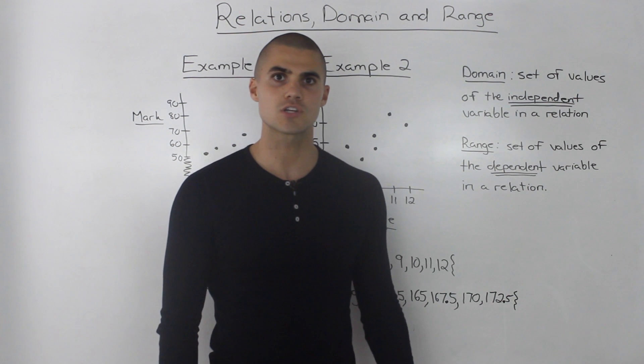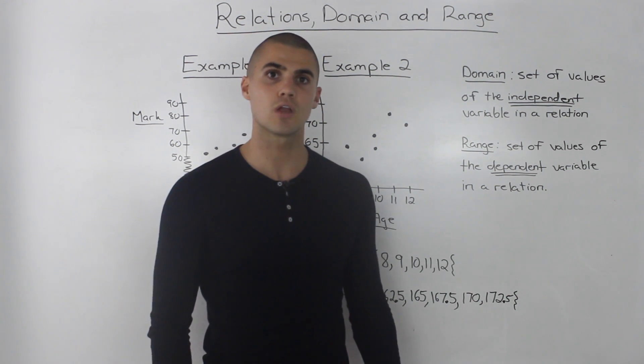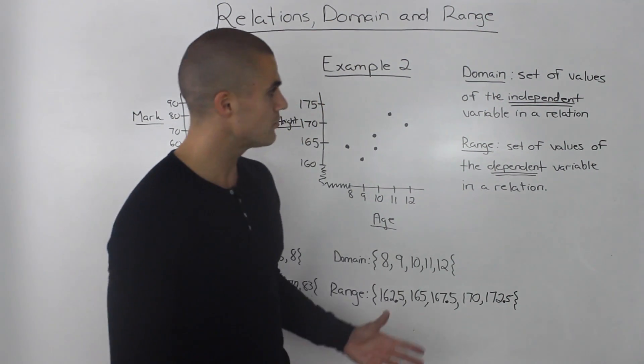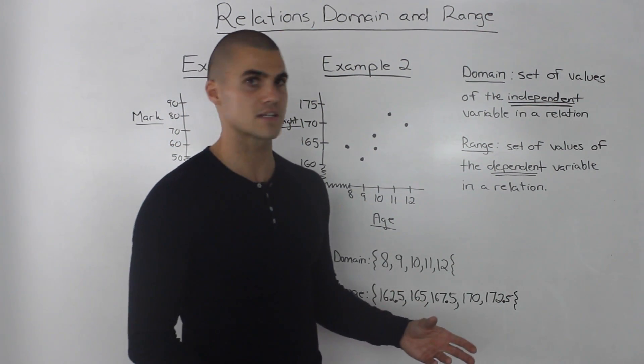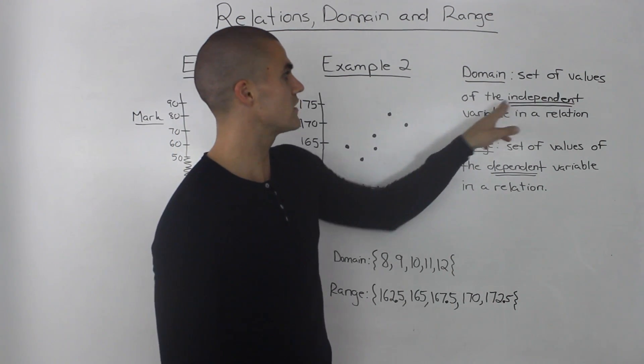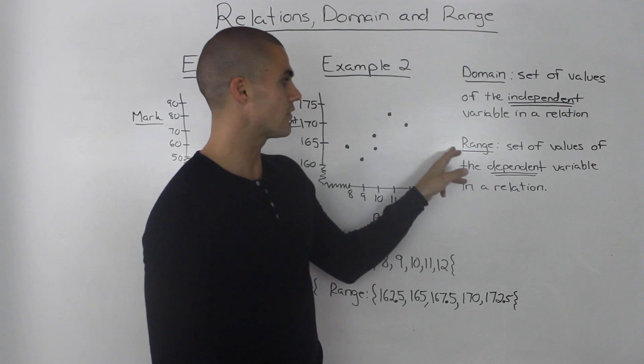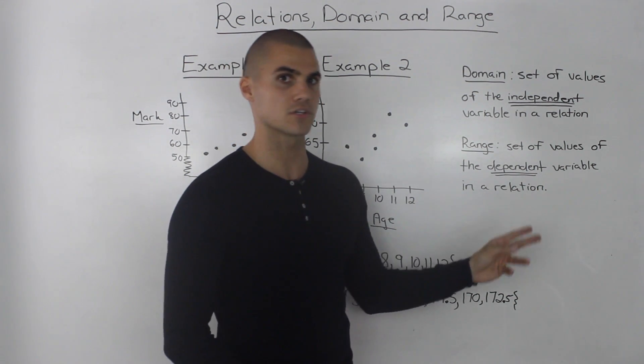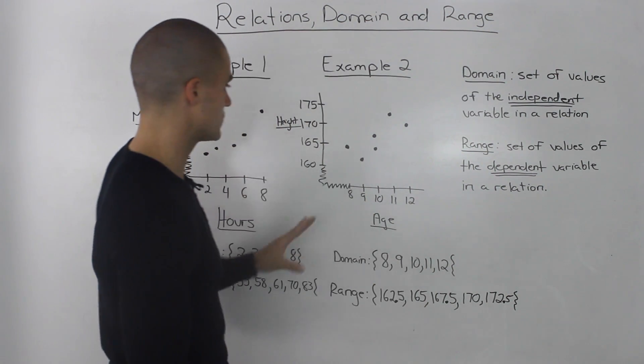Domain and range is something we're going to get into in more detail in future sections and videos. But for now, let's start with the basic definitions. The domain is the set of values of the independent variable in a relation, and the range is the set of values of the dependent variable in a relation.